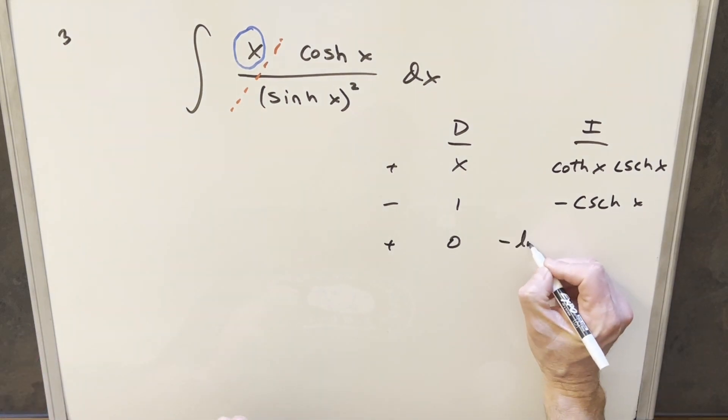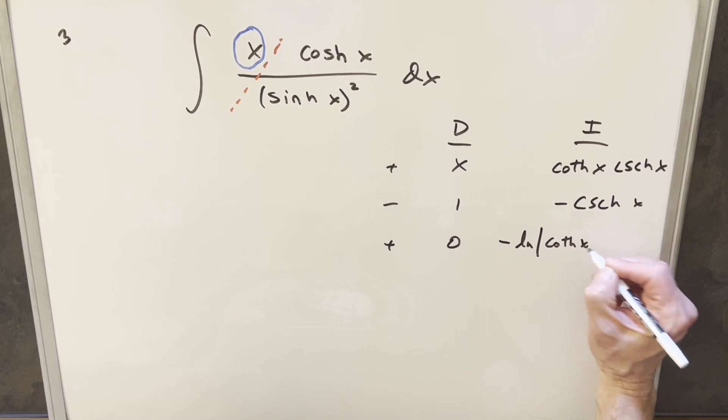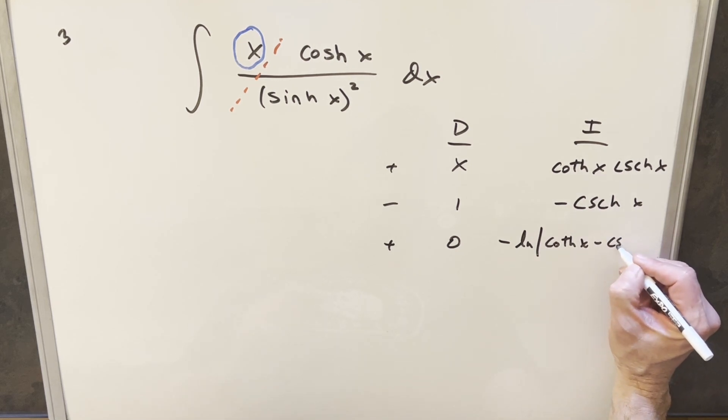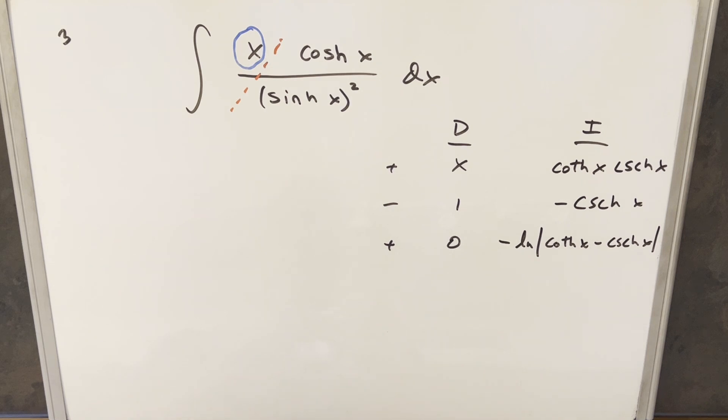So for this, we'll just bring down the minus sign. This is going to be natural log, absolute value, hyperbolic cotangent minus hyperbolic cosecant. And we'll put it in absolute values.